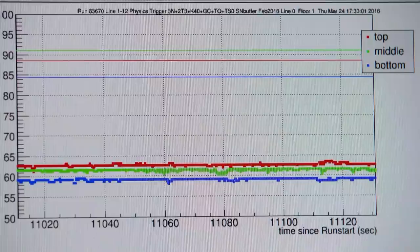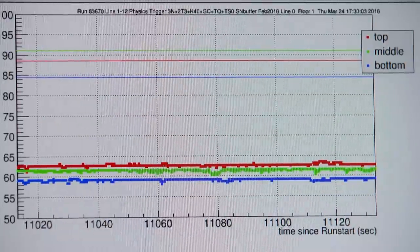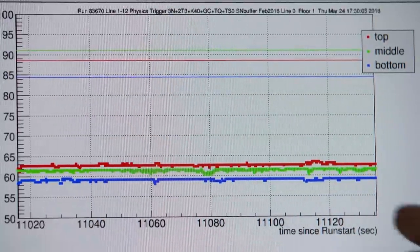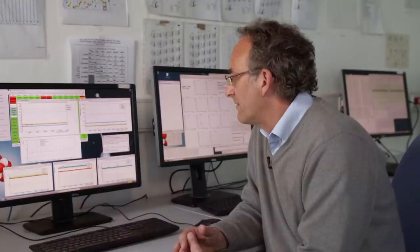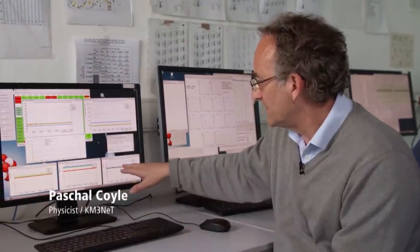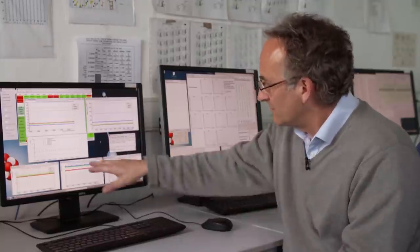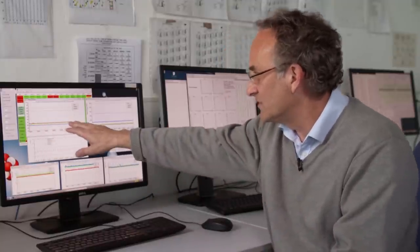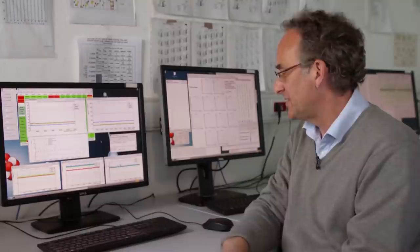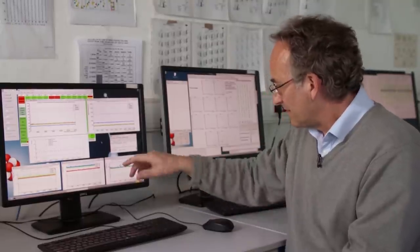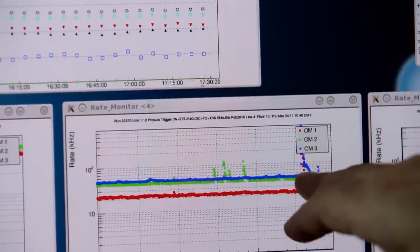Each box corresponds to one of the detection strings. Each cross represents the height and the time of the photon that was detected. On these displays we can see a kind of time history of the counting rates on the optical modules. The main source of light that we detect is from the natural radioactivity of the salt. The potassium-40 isotope of the salt emits a little beta particle which emits light.